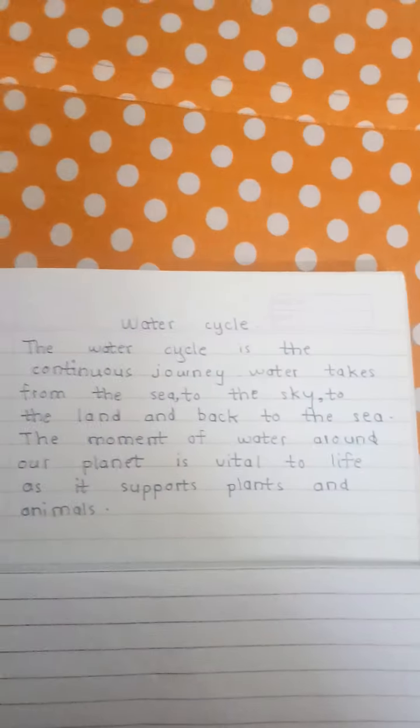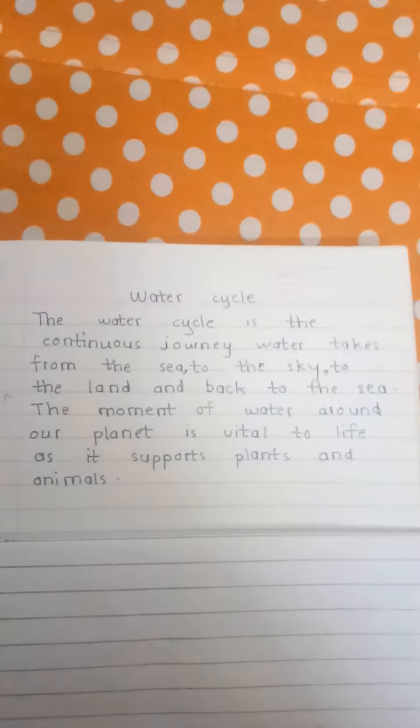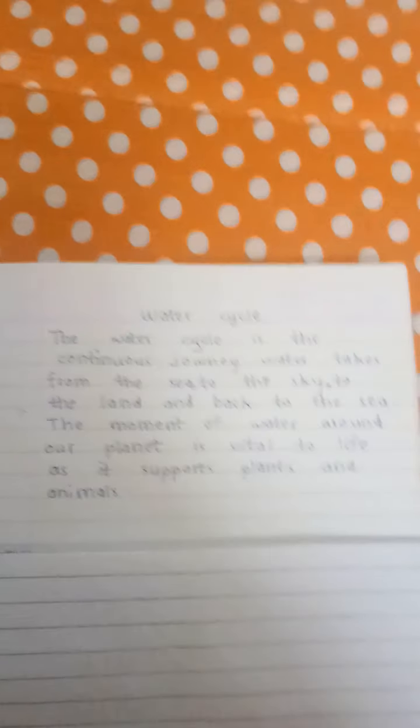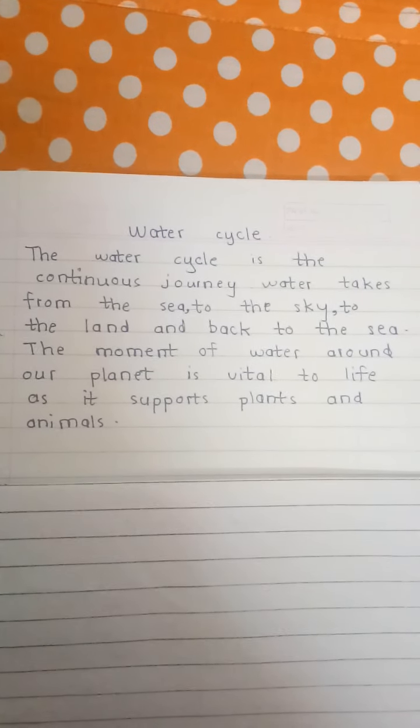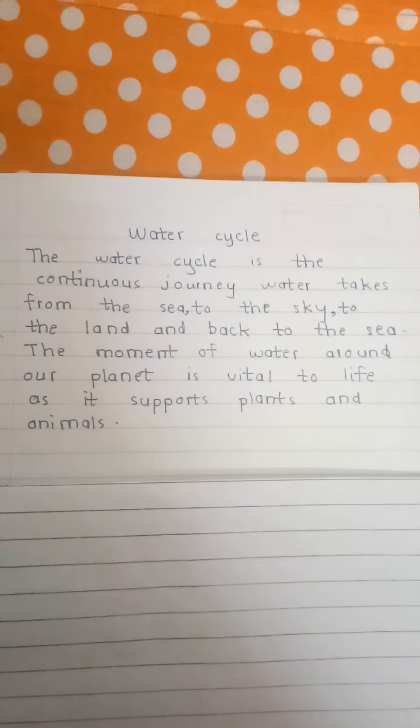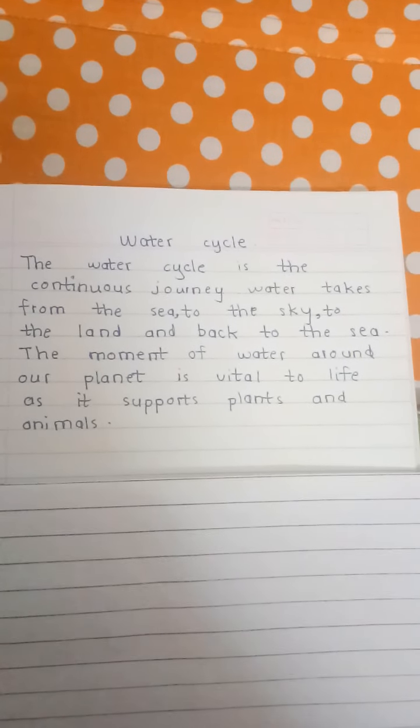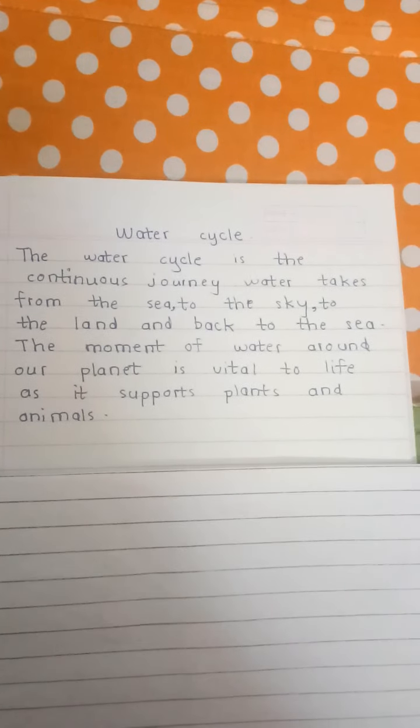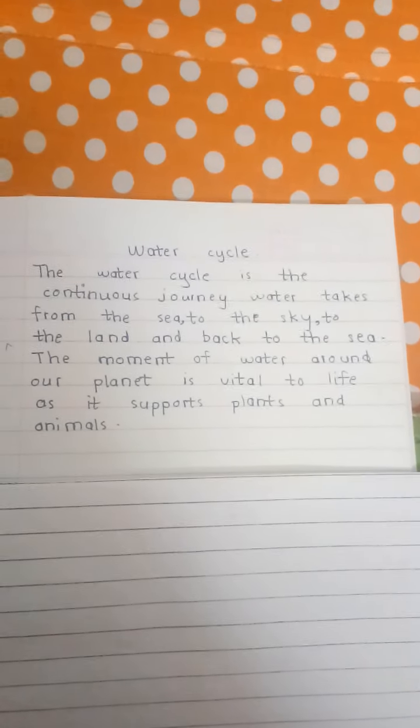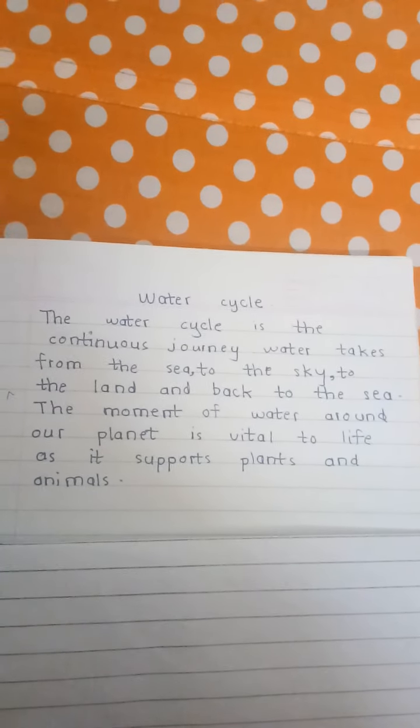Let's start. Do you know children what is water cycle? Let's see the definition. The water cycle is the continuous journey water takes from the sea to the sky to the land and back to the sea. The movement of water around our planet is vital to life as it supports plants and animals.